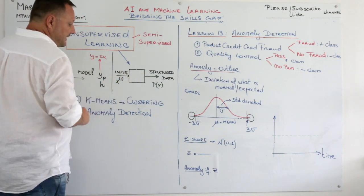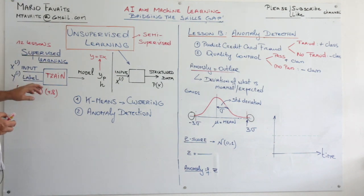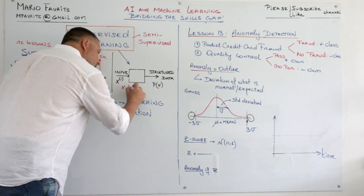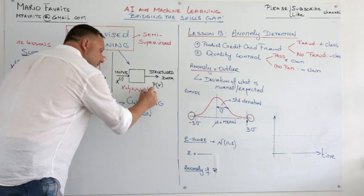In unsupervised learning, you don't have labels or y's. You only have x's. For example, x equals 2, 4, 6, 8 and so on.